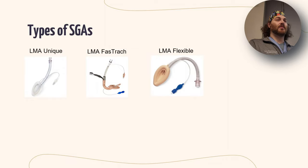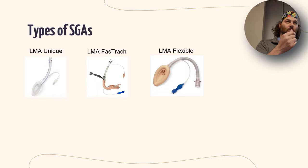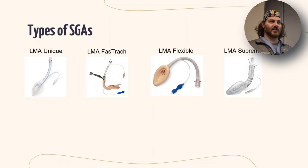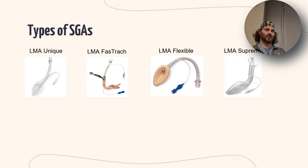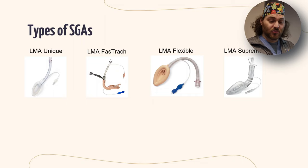The LMA Flexible was developed because standard LMAs have rigid plastic sticking straight up. We use them at the Health Center for eyeball cases — it allows you to place an LMA but get the tube out of the way. The LMA Supreme is a disposable second-generation LMA with a gastric port, so you can put an OG tube down and suction the stomach. One of the biggest complications with LMAs is aspiration risk because it doesn't fully seal the airway, and the gastric port addresses that concern.